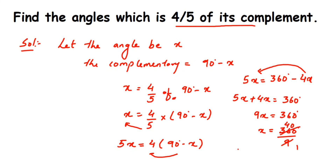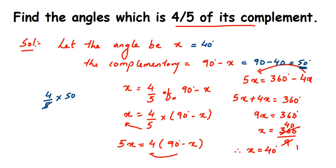So the first angle X is 40 degrees, and its complement is 90 minus 40, which is 50 degrees. To cross-check: 4/5 of the complement — 4/5 of 50 — cancel 5 and 50 to get 10, then 4 times 10 is 40 degrees, which is our first angle. So the answer is 40 degrees and 50 degrees. I hope this is clear — if you have any questions, drop a comment below. Thank you for watching!